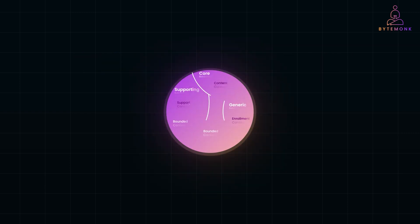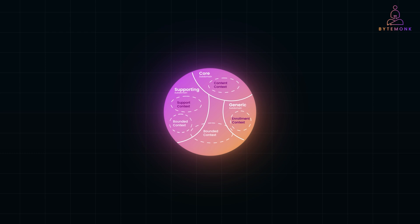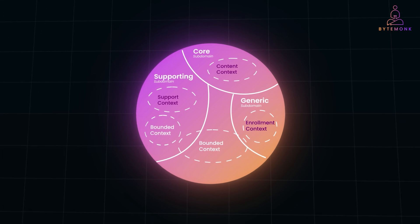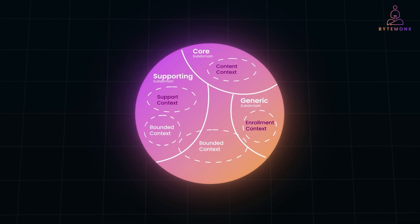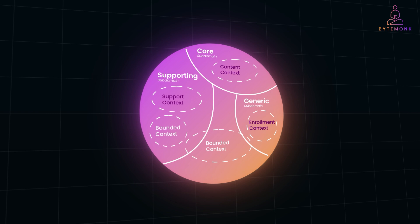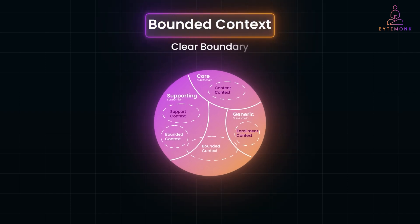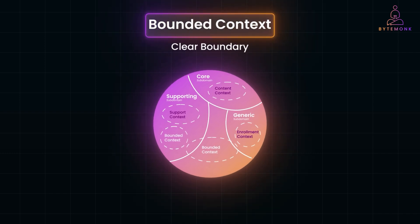And this is where bounded contexts come in. By defining clear boundaries for each team, we can create separate models tailored to their specific needs. In the enrollment context, we define students with attributes like payment status, course enrollments, and registration date. The content context focuses on progress, lesson completion, and quiz scores. And the support context captures broader details about user accounts and support requests. In domain-driven design, a bounded context is a clear boundary within which a specific ubiquitous language is valid.